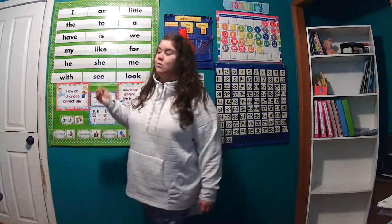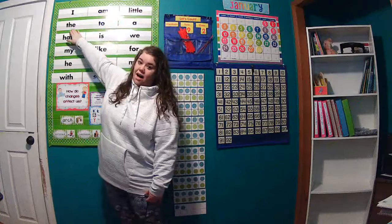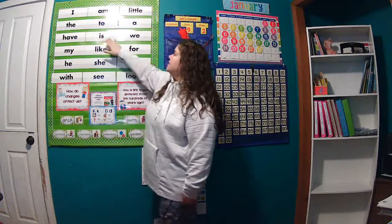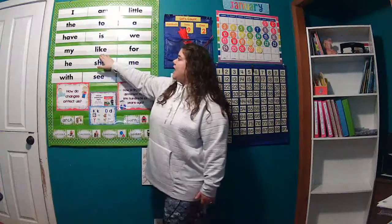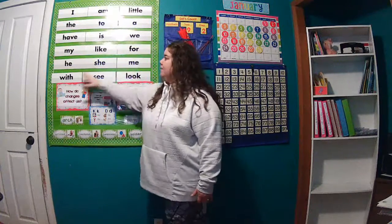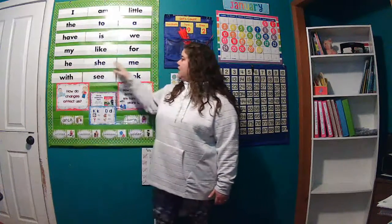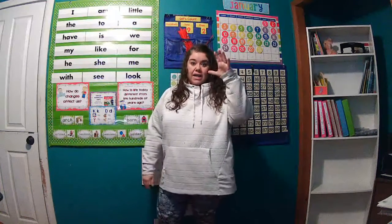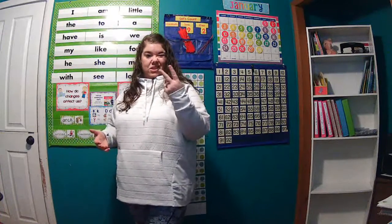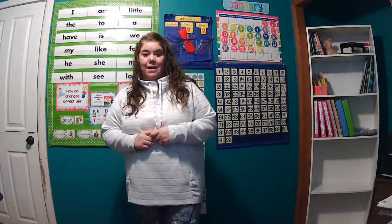Let's do a quick review of all of our sight words so far: I, am, little, the, to, a, have, is, we, my, like, for, he, she, me, with, see, look. Notice that he, she, me all have that long ee sound at the end. So they are considered rhyming words — they have the same ending sound. Me, he, she, we — those are all rhyming words.